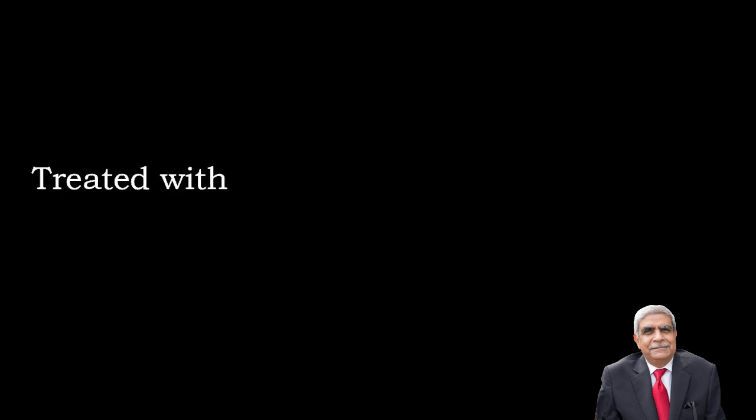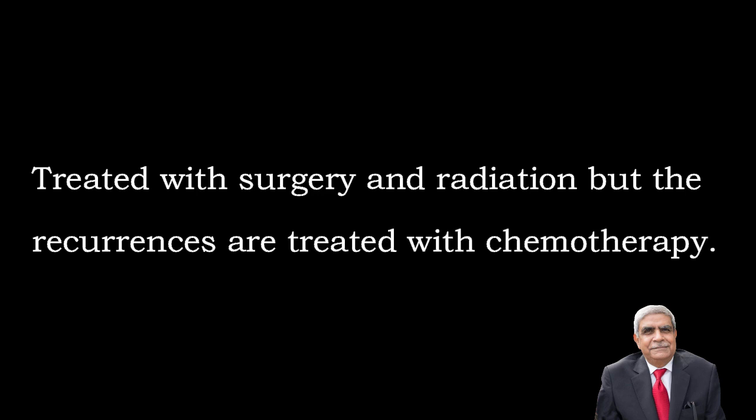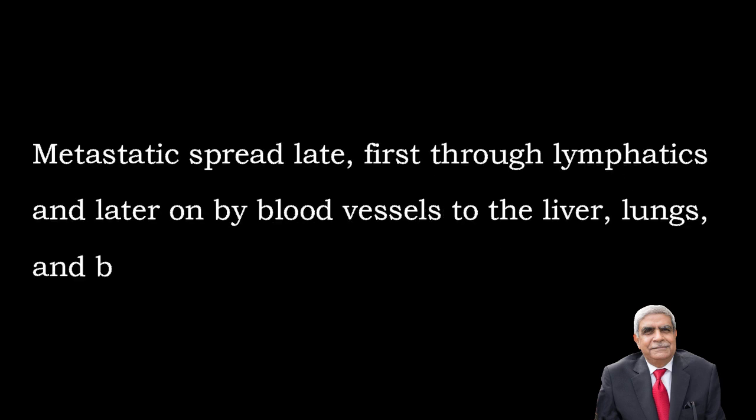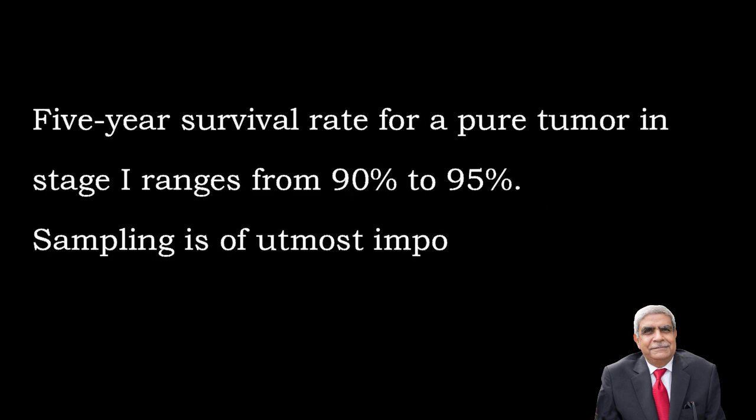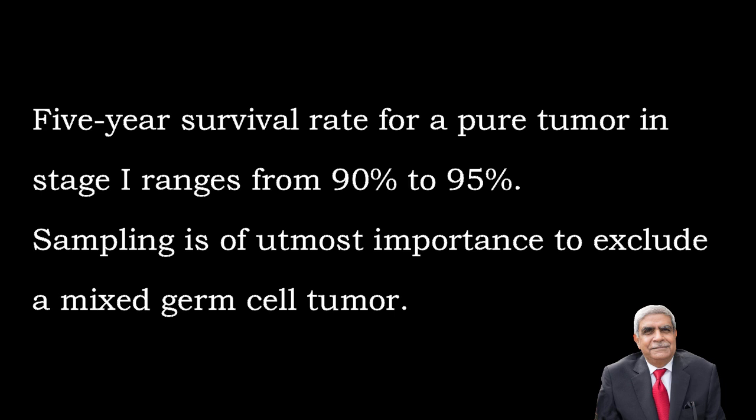Treatment and prognosis: These tumors are treated with surgery and radiation, but recurrences are treated with chemotherapy. Metastatic spread is late, first through lymphatics and later by blood vessels to the liver, lungs, and bone. The five-year survival rate for a pure tumor in stage 1 ranges from 90 to 95%. Proper sampling of the submitted tissue is extremely important to exclude a mixed germ cell tumor, because pure dysgerminoma and mixed germ cell tumor have different prognosis.